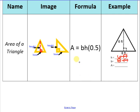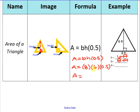Let's write out the formula. Area equals base times height times 0.5. Area equals 8 times 6 times 0.5. Then you can just multiply all of these numbers together: 8 times 6 times 0.5 gives you 24. You cannot forget your units, so it's going to be 24 feet squared — or 24 feet to the second power — because it's feet times feet, which is feet to the second power.